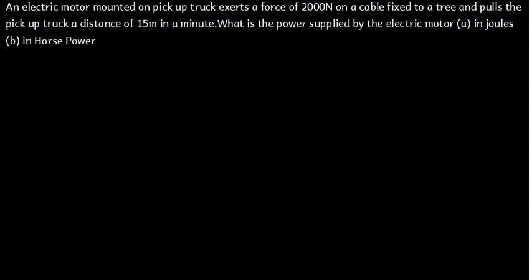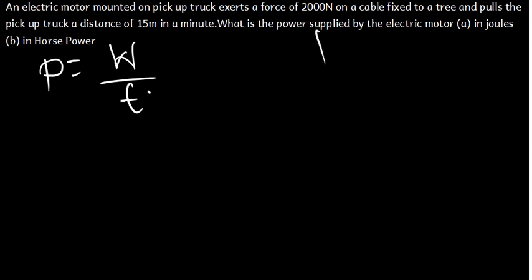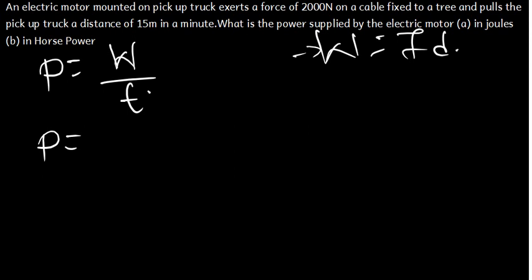We don't have velocity, but we have the force and the distance. We know power is work divided by time, and work is force times distance. So we can write power as force times distance divided by time. The time is one minute, which equals 60 seconds.